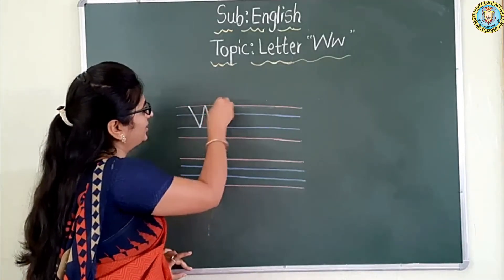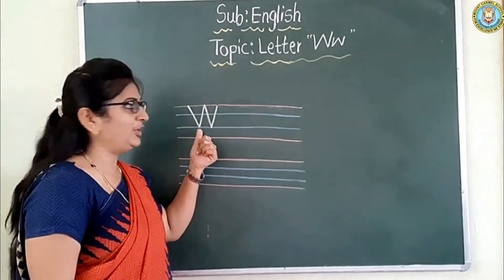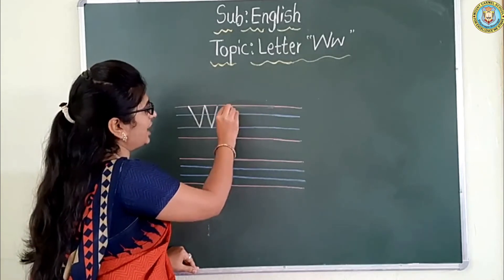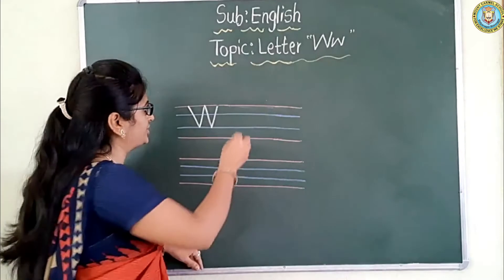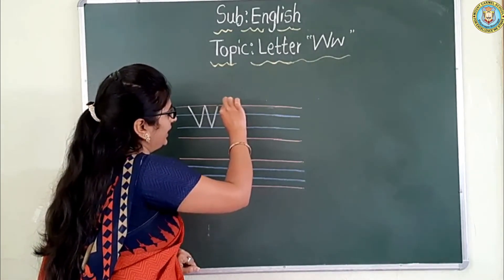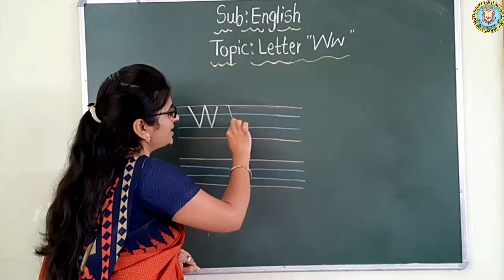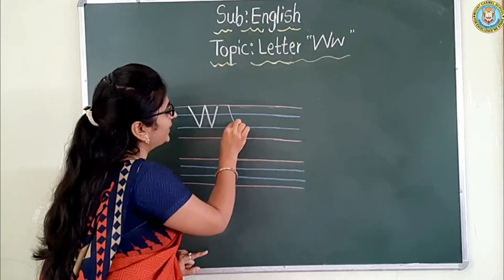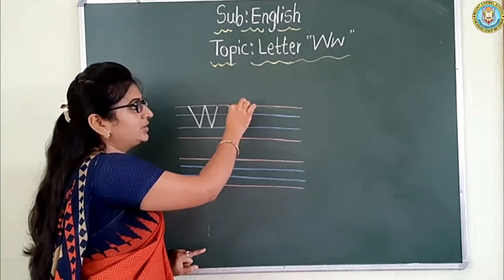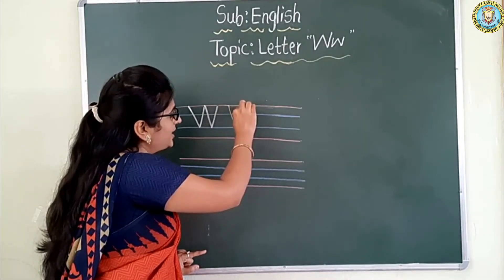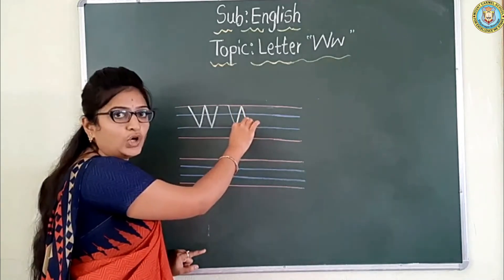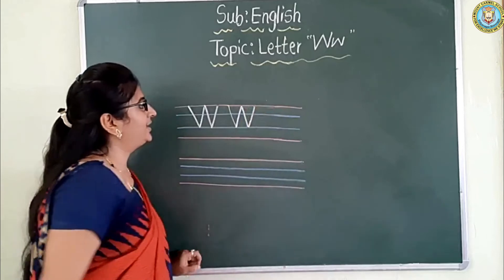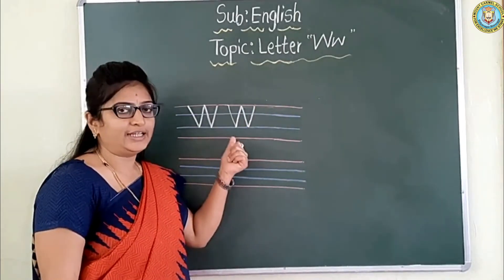See here — which letter is it? Letter W. Which letter is it? Letter W. See here once again. First you start from the first red line. Write a slanting line to touch the second blue line, and again go up with another slanting line to touch the first red line. Which letter is it? Letter W.